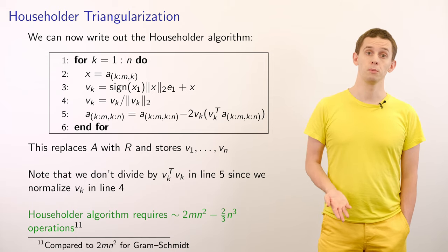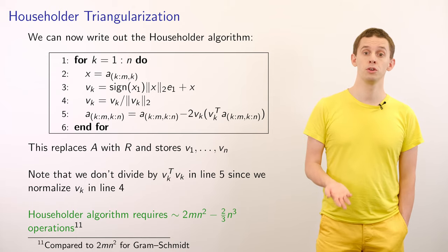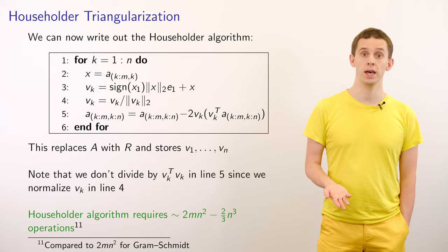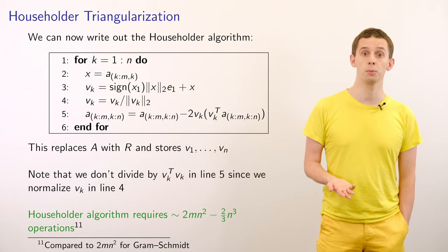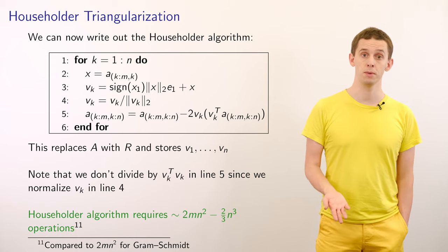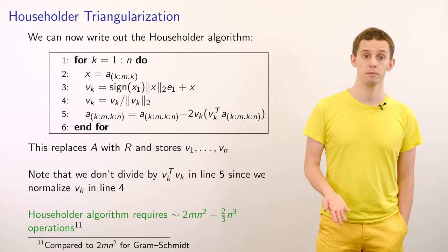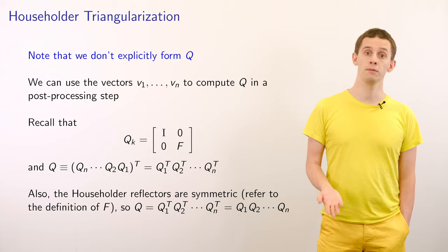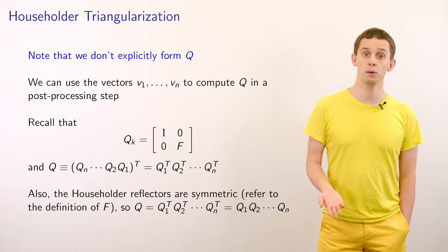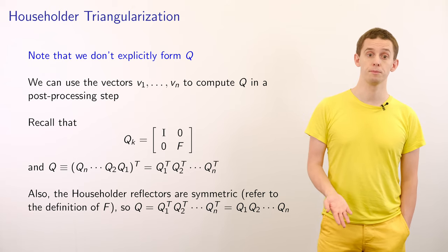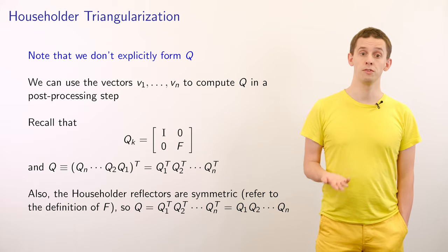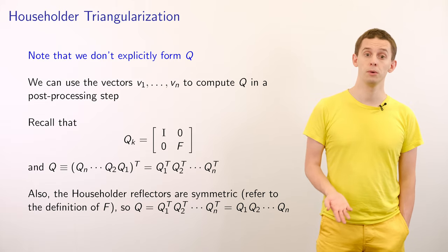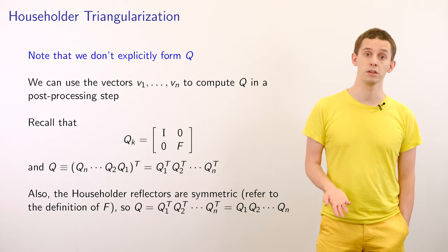The Householder algorithm asymptotically requires 2MN² minus (2/3)N³ operations, making it slightly more efficient than the Gram-Schmidt method. Note that we don't explicitly form the matrix Q in the algorithm. However, we can use the vectors V_1 through V_n to compute Q in a post-processing step.